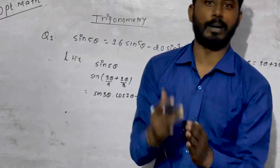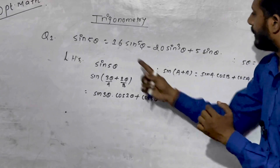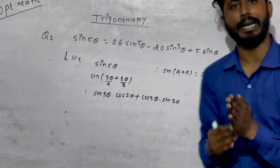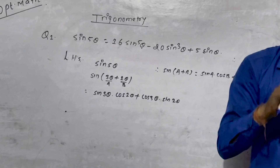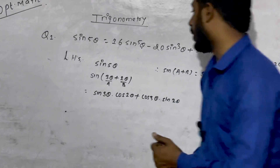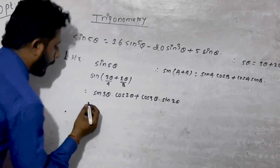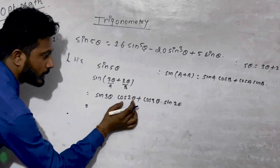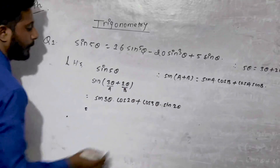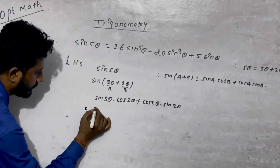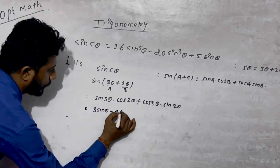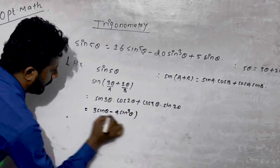So, where we have the formula derived from, we had the same formula. So sin(3θ) into cos(2θ) plus cos(3θ) into sin(2θ). We use sin(3θ) = 3sinθ minus 4sin³θ.